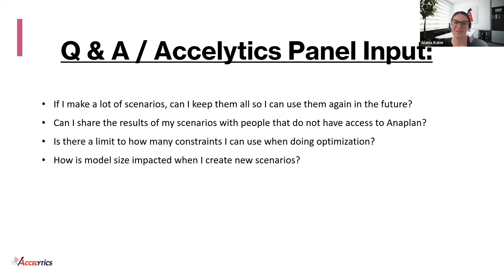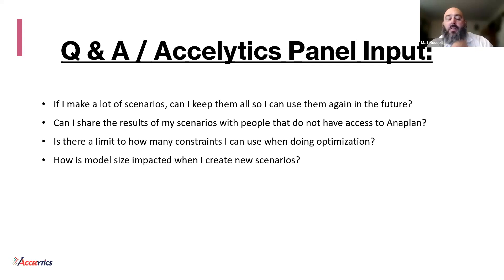Is there a limit to how many constraints I can use when doing optimization? You can use multiple variables. The real question when coming to optimization is: what are we trying to optimize? Are we trying to optimize revenue or gross profit? You're only going to be able to optimize for one thing, but you can have many constraints and many inputs. The key is getting the right question to ask the optimizer — what to optimize for your business.